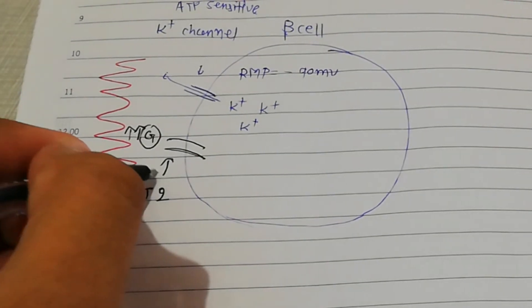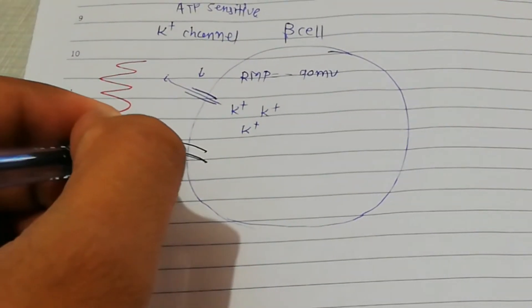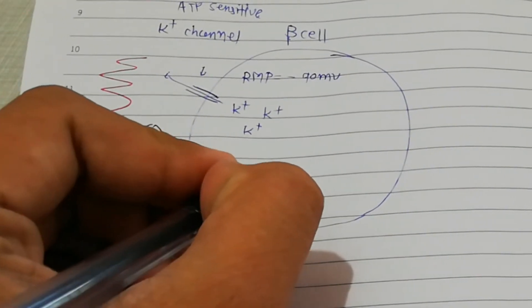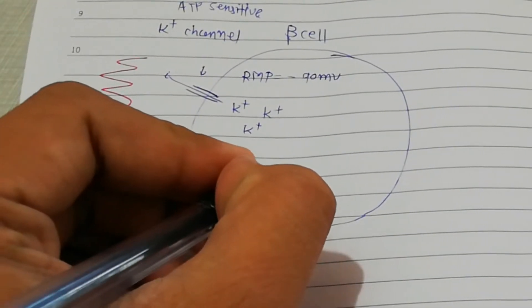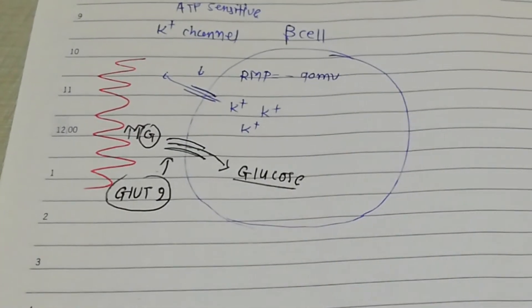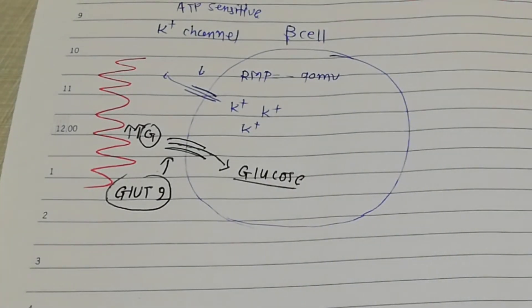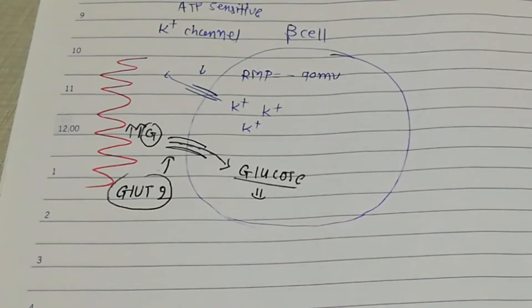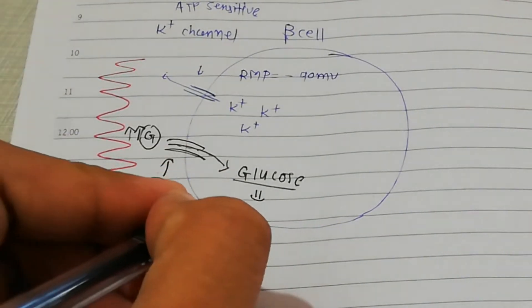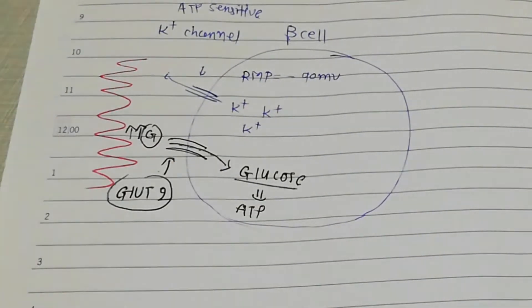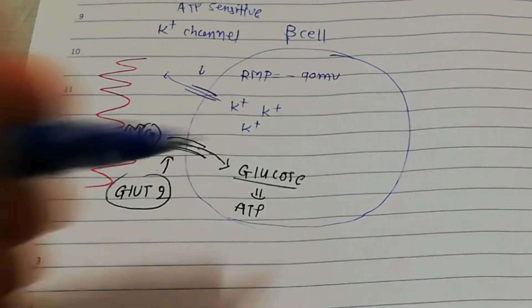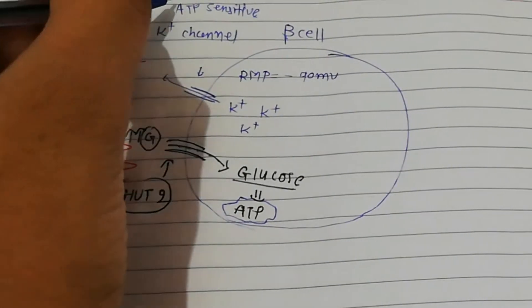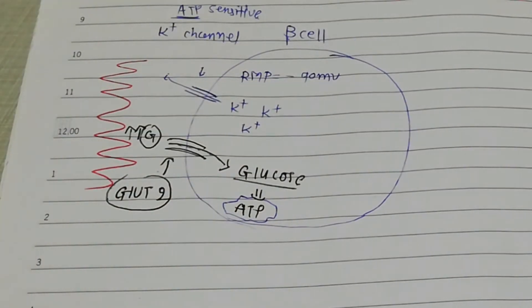Via the GLUT2 transporter, glucose comes inside the beta cell. That glucose then goes into glycolysis and the citric acid cycle, and at the end of that cycle, ATP is produced.